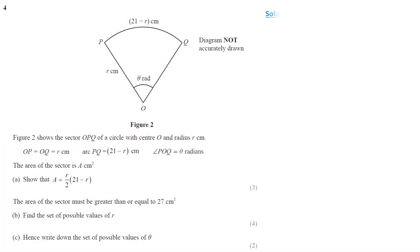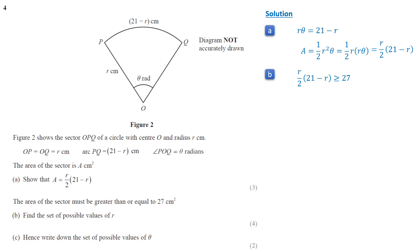The arc length of a sector, r·theta, equals 21 minus r. The area of the sector is half r squared theta. Since r·theta equals 21 minus r, we get area equals r over 2 times (21 minus r). For part b, we want the area r over 2 times (21 minus r) to be greater than or equal to 27.